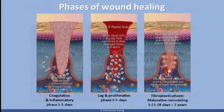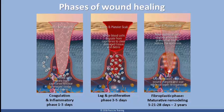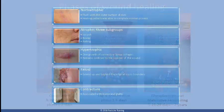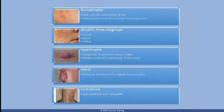If a wound becomes covered with epithelial tissue within two weeks, minimal fibrotic collagen will be deposited and no significant scar will form. If an injury takes longer than three to four weeks to close over, a scar will form. Scars form differently based on the location of the injury on the body and the age of the person who is injured. The worse the initial damage is, the worse the scar will be.